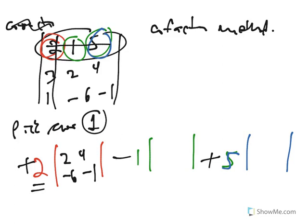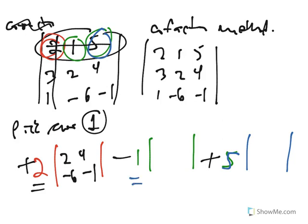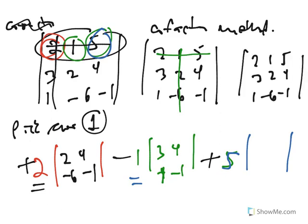If instead, I crossed off—I'm going to write this matrix again. Next to this one here, I'm going to cross off the row and column that the 1's in, and the numbers that are left are 3, 4, 1, negative 1. And finally, if I cross off the row and column that the 5 was in, I'd have 3, 2, 1, negative 6.